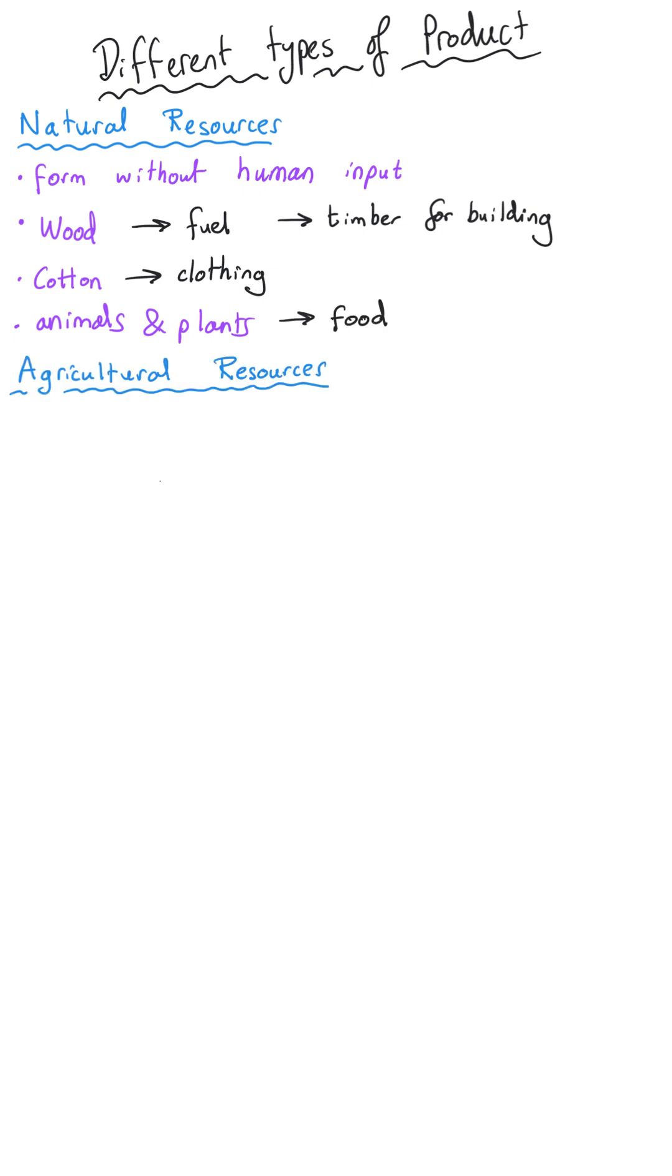As human civilization developed we were able to supplement these natural resources with improvements in agricultural techniques. For instance we are able to produce a higher yield of crops that we grow in fields by developing better and better fertilizers that we can use to support them growing.